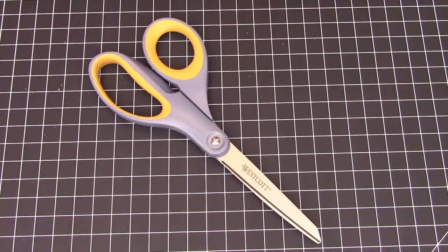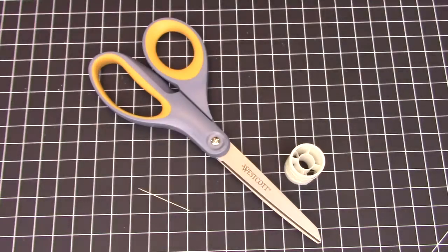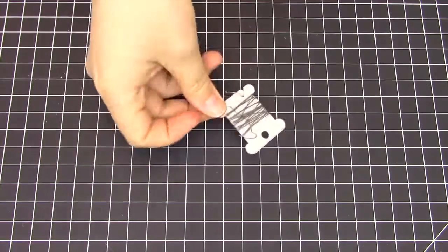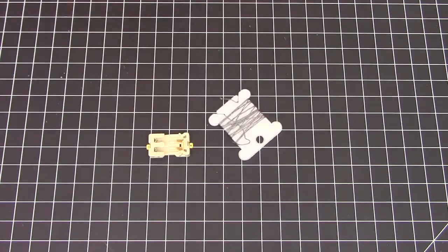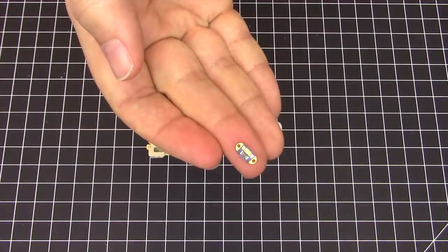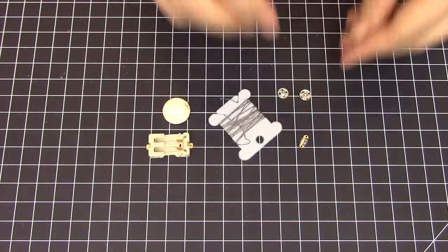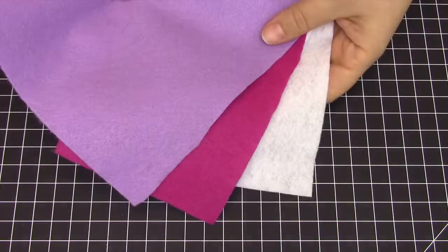You will need scissors, a needle, thread, pins, as well as conductive thread, a battery holder, a battery, and LEDs. And a snap. And finally, you'll need felt.